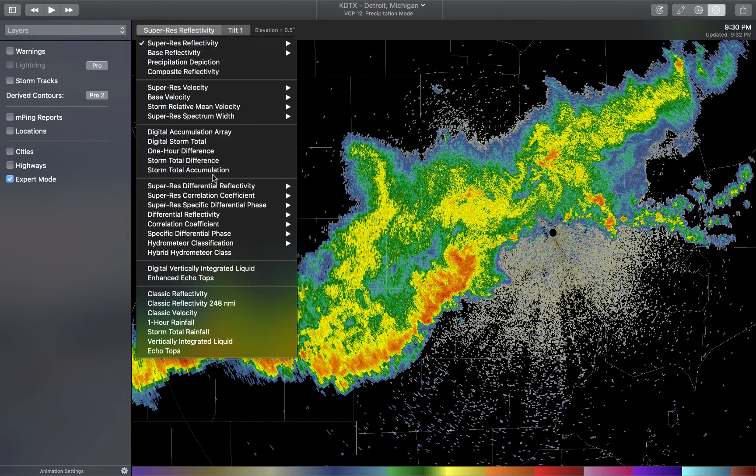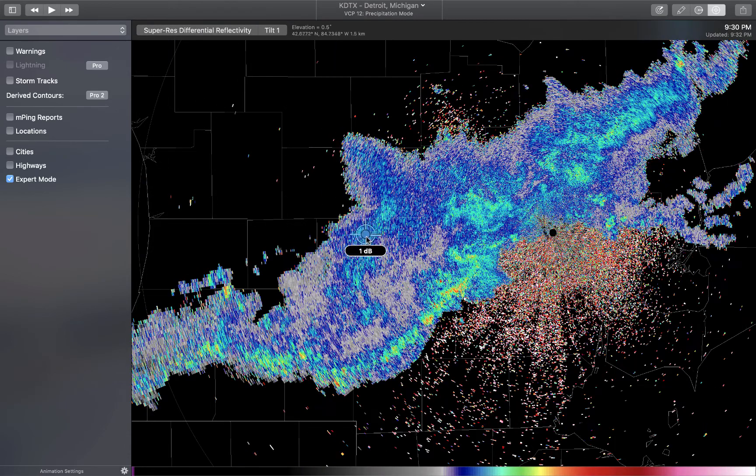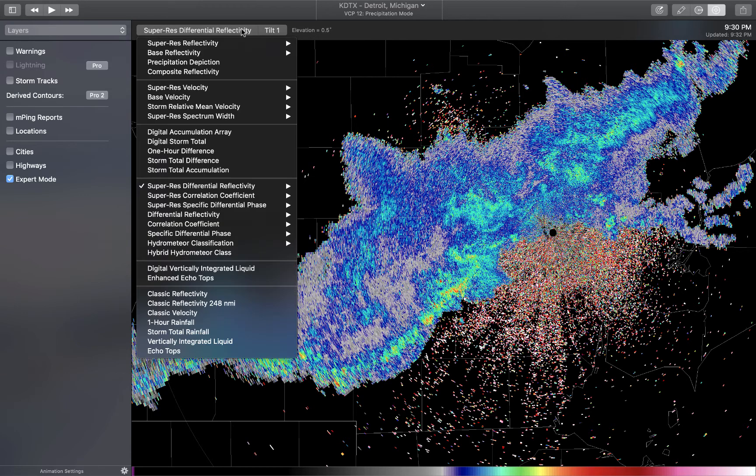We'll take a look at the differential reflectivity. You're going to see that generally it's pretty small behind the squall line. 0, 1 dB is showing up a lot, but in the squall line we're seeing values that are a little bit higher. 2, 3, I see even a 4 popped up, I think, in terms of ZDR, in terms of dB as the units used.